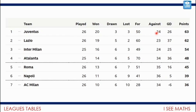GD stands for goal difference — if ever teams have got the same number of points, we look at goals scored and goals conceded, and the team with a better goal difference is higher in the league. Points are calculated as three points for every win — for Juventus, that's 3 lots of 20, which is 60 points from wins. You get one point for a draw, so that makes another three points, giving them 63 total. You get no points for losing. AC Milan is the only team here with a negative goal difference — they scored 28 goals but let in 34, so the difference is negative six.